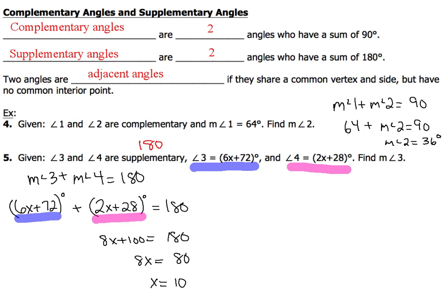On our third line, we simply combine like terms to get 8x plus 100 equals 180. Using the subtraction property of equality, we're going to end up with 8x equals 80, and then the division property of equality gives us x equals 10.